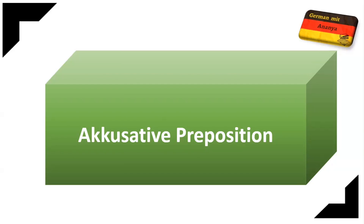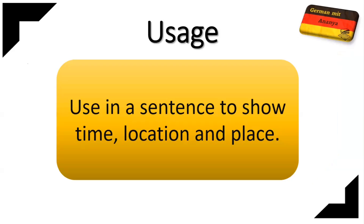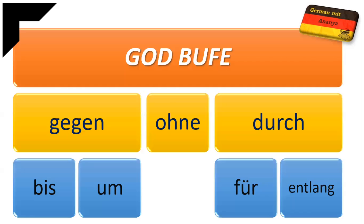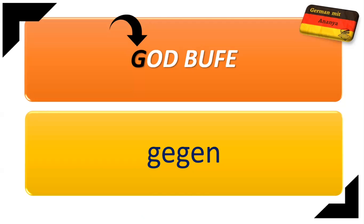Today I will help you with accusative prepositions — where you can use them in a sentence to show time, location, and place. Just as we have prepositions in English, we use accusative prepositions in German. 'Got buffet' is a mnemonic to remember the accusative prepositions: G for gegen, O for ohne, D for durch, B for bis, U for um, F for für, and E for entlang.